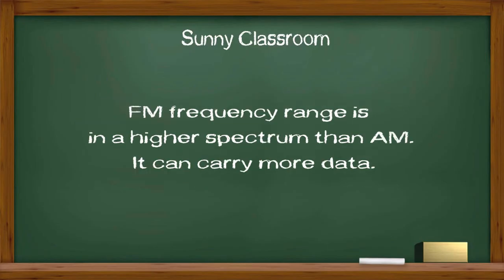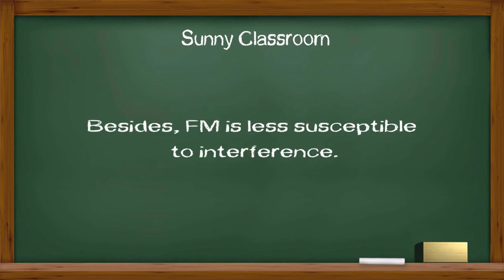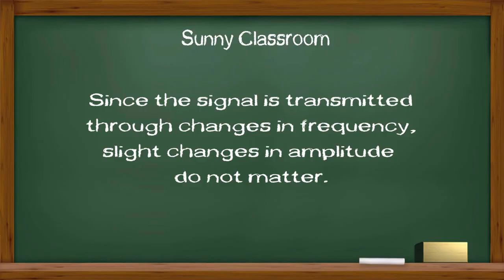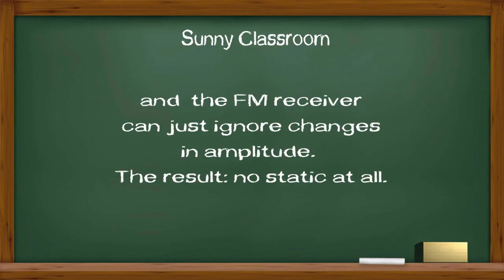FM frequency range is in a higher spectrum than AM. It can carry more data. Besides, FM is less susceptible to interference. Since the signal is transmitted through changes in frequency, slight changes in amplitude do not matter, and FM receiver can just ignore the changes in amplitude.